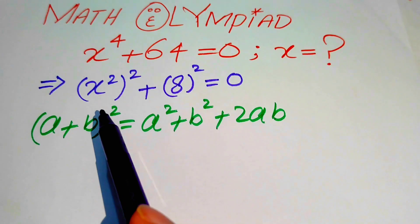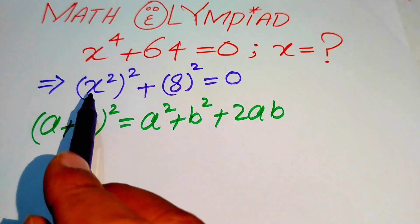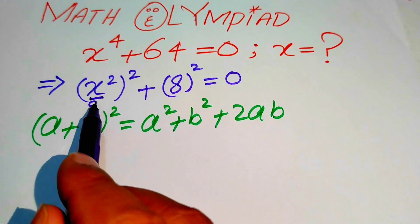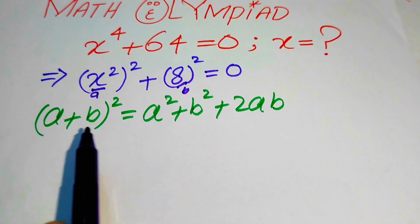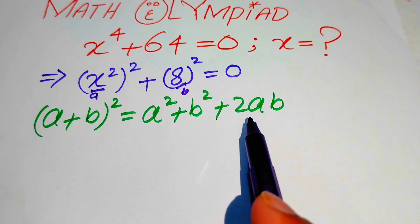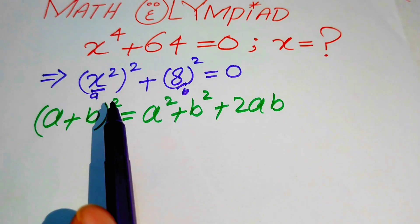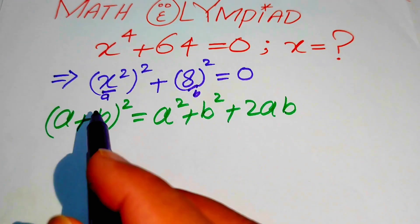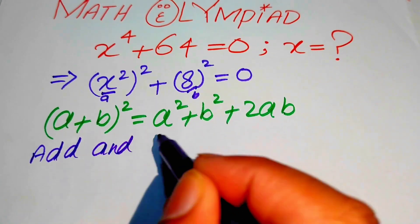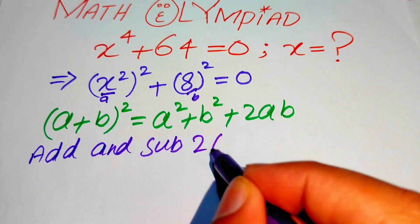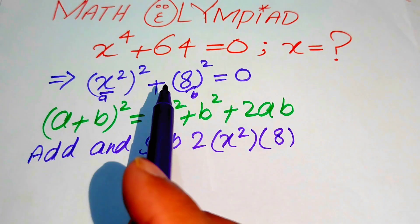In order to complete the square of this term we need the term 2 times ab. If you focus here, you see that b is 8 and a is x squared. In order to make the completing square we need 2 times ab, which is 2 times x squared into 8. So we add and subtract 2 times x squared into 8 on the left-hand side.